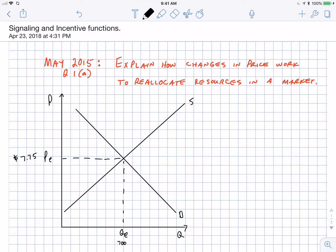Explain how changes in price work to reallocate resources in a market. So I have a market for fake good widgets, if you will, set at equilibrium $7.75. At that price, there are 700 widgets sold in this marketplace.